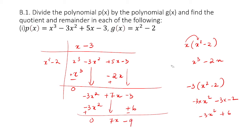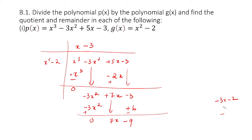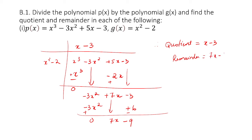Therefore, the quotient of this polynomial is x minus 3, and the remainder is 7x minus 9. We'll go to the next question.